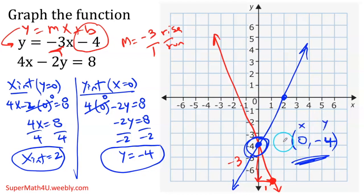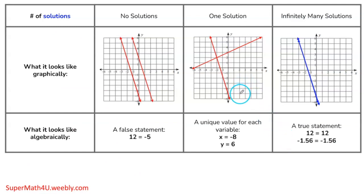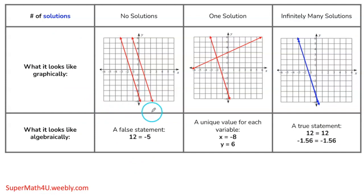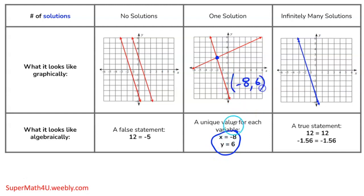When we graph a system of two equations, we have two lines. We can have one solution, as we just did — two lines intersecting at one point. The x and y value of that intersection is your solution. In this case, the solution is negative 8 comma 6. It's called one solution because the two lines intersect at exactly one point.